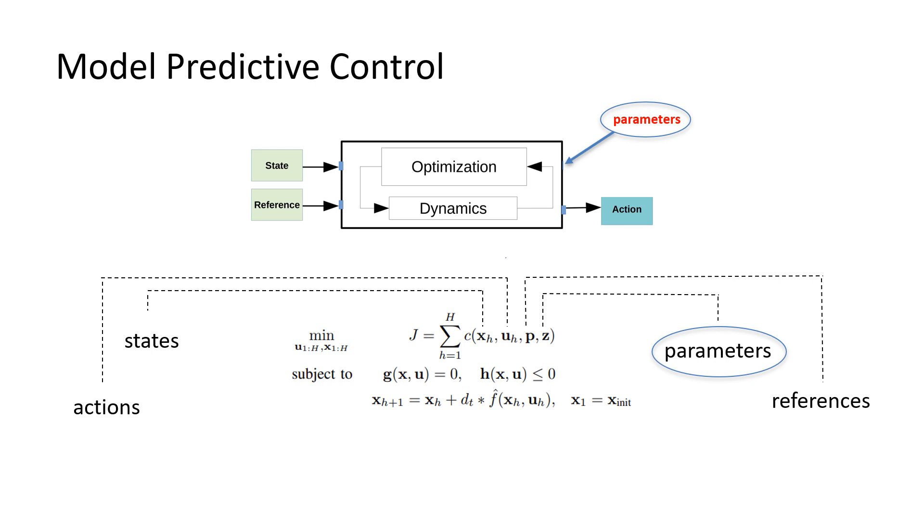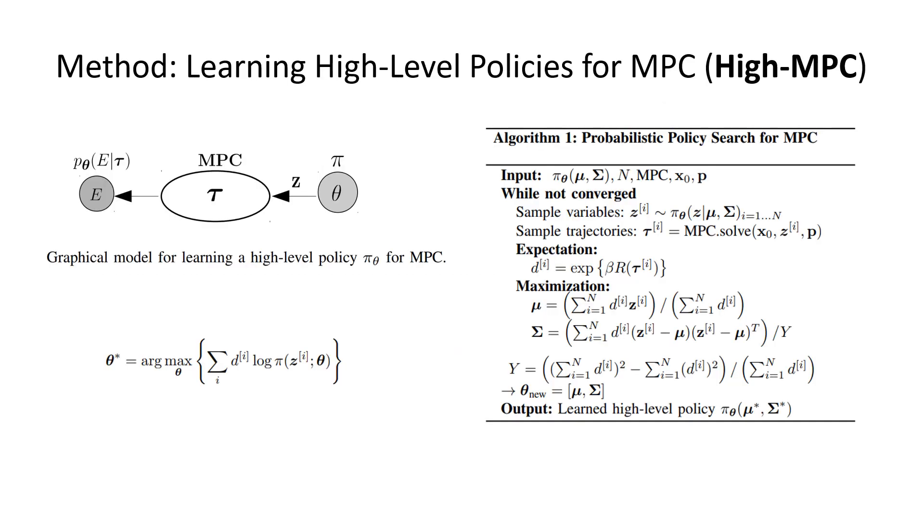We formulate the search of hyperparameters in MPC as a policy search problem. We refer to our method as learning high-level policies for MPC, in short, High-MPC. First, we formulate the search of hyperparameters in MPC, which are also considered as high-level decision variables for MPC, as a probabilistic policy search problem.